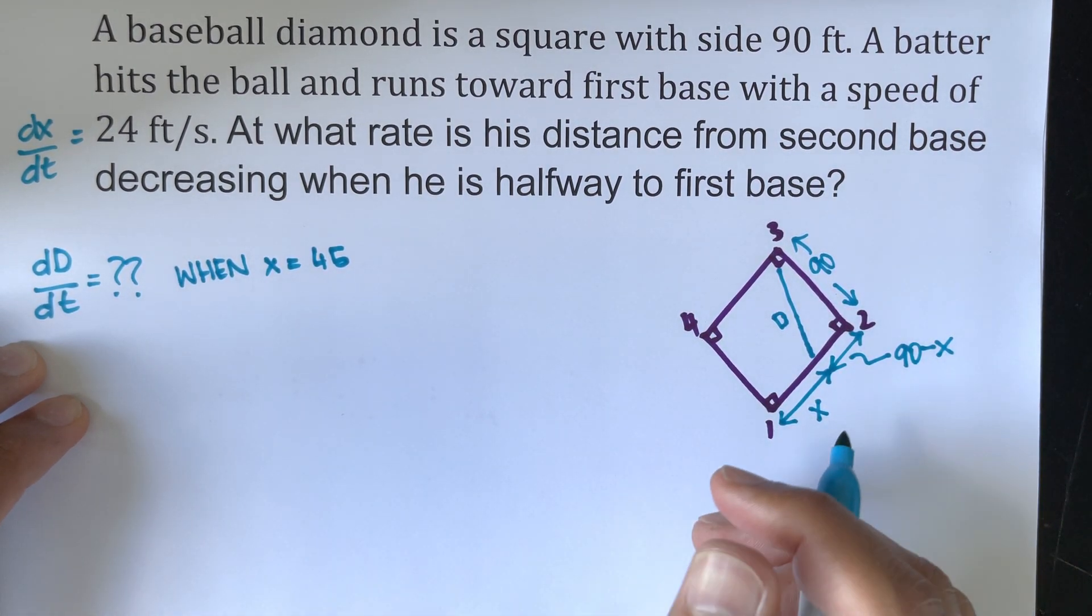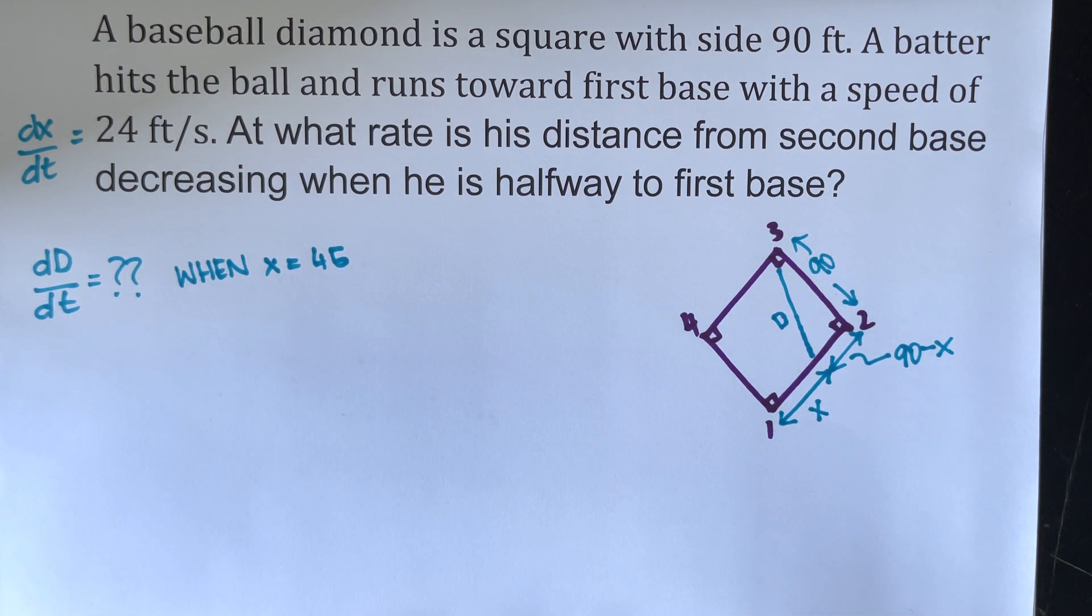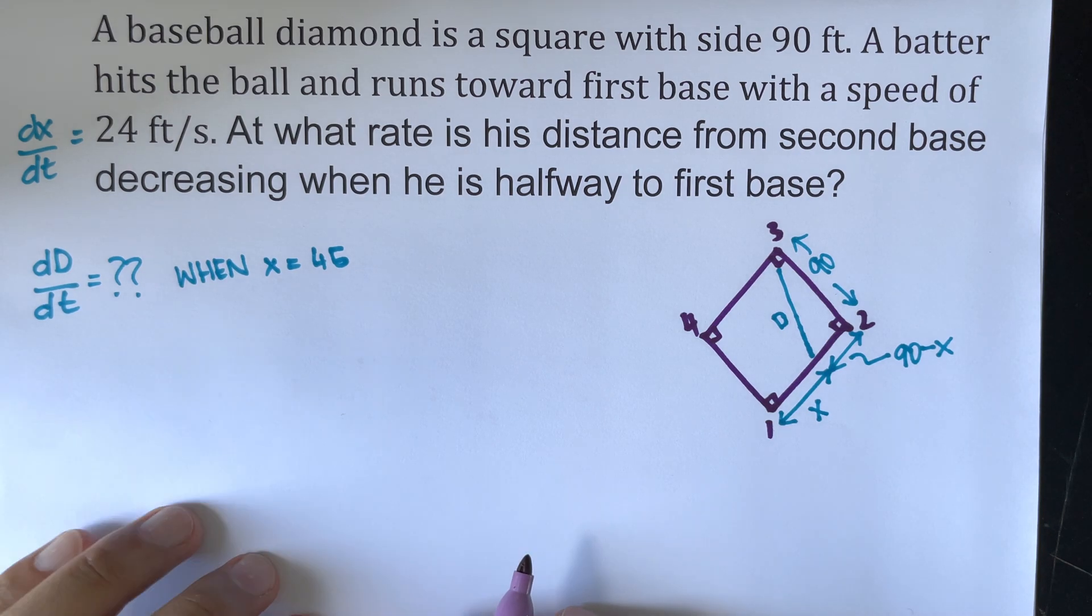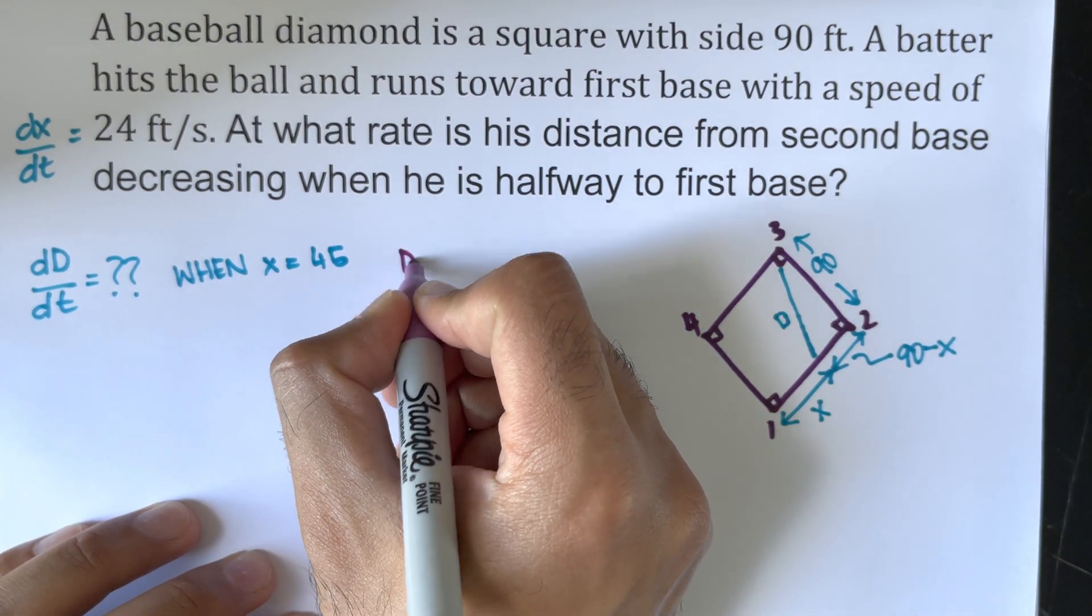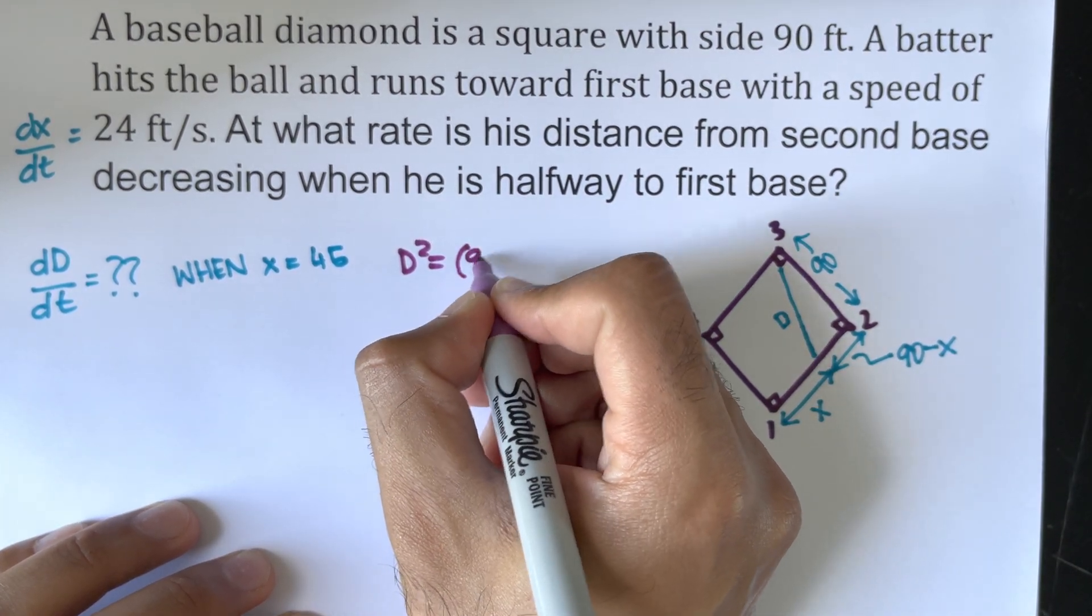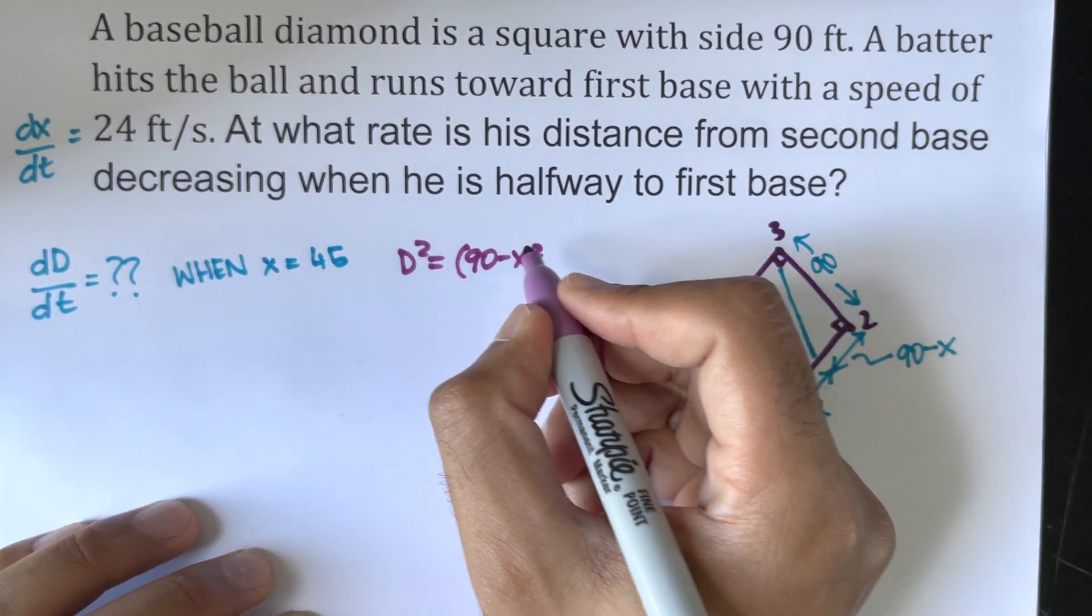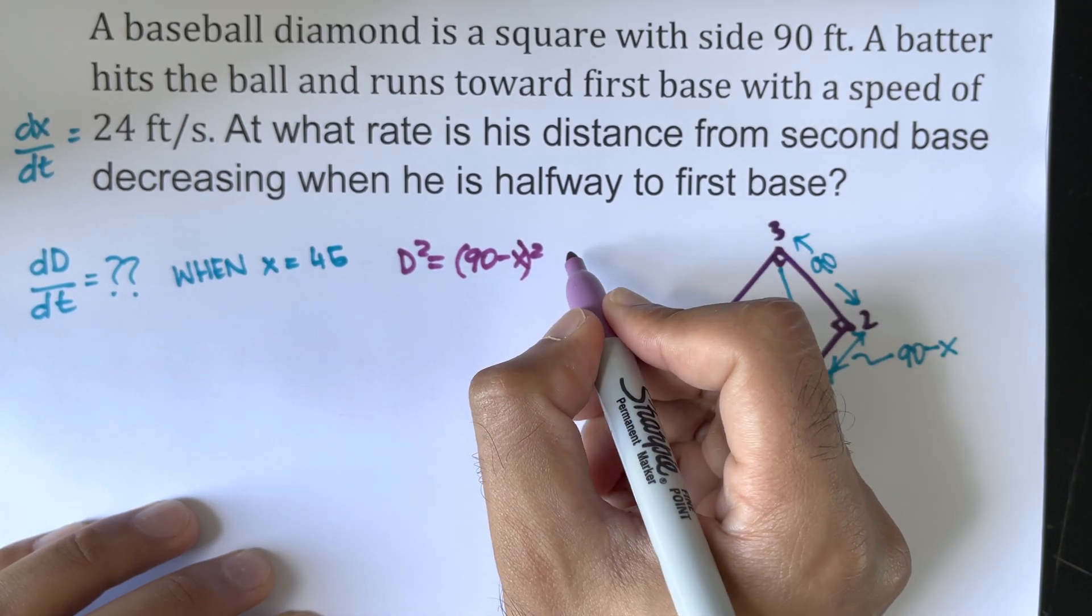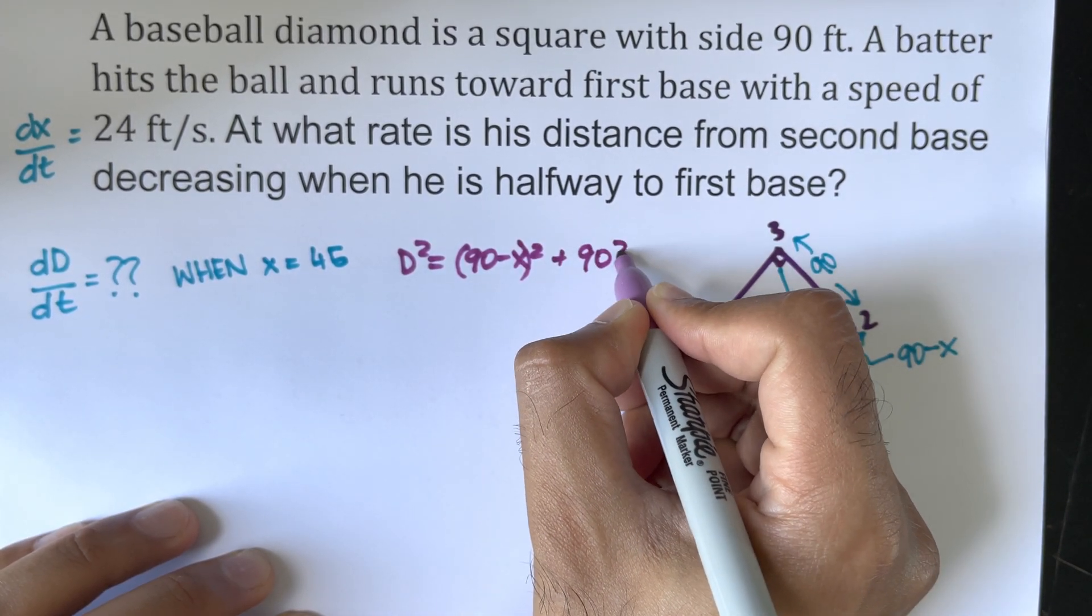Now from Pythagoras' theorem, from this diagram, we know that d squared will equal (90 minus x) squared plus 90 squared.